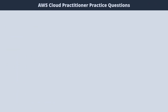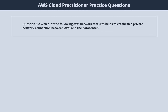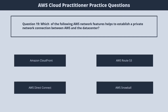Question 19. Which of the following AWS network features helps to establish a private network connection between AWS and the data center? 1. Amazon CloudFront. 2. AWS Route 53. 3. AWS Direct Connect. 4. AWS Snowball. The correct answer is 3. AWS Direct Connect.